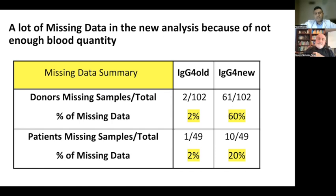For the missing data, for patients and donors in batch one, they used the IgG old value from the first analysis. For batch two patients and donors, they used the new values from the second analysis — the retest. And when there were missing values for patients and donors in batch two, they used the old value from the first analysis. This by itself can explain non-replicability.